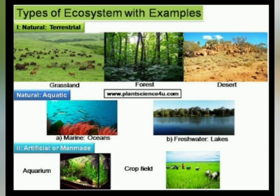An aquatic ecosystem is divided into two types: marine ecosystem and freshwater ecosystem. Marine water ecosystem has oceans as examples, and freshwater ecosystem will contain lakes as an example.